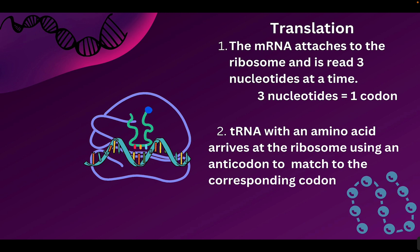Once the mRNA is complete and has left the nucleus, we are finished with the process of transcription — step one is complete. We're now going to go to translation. The mRNA attaches to the ribosome, going in between the top and bottom part of the ribosome. As it slides through, it will be read three nucleotides at a time. A set of three nucleotides is called a codon, and we go through and read it codon by codon.